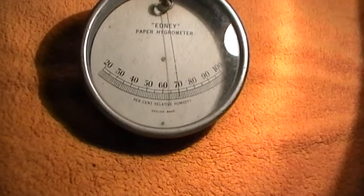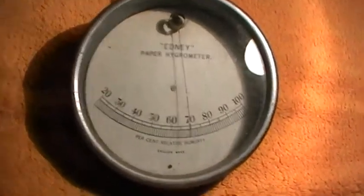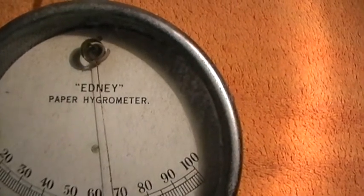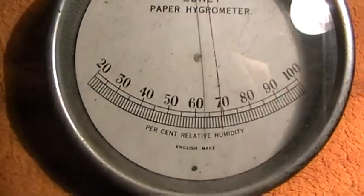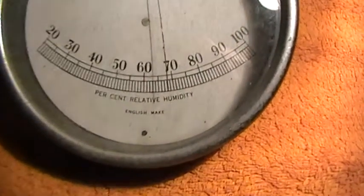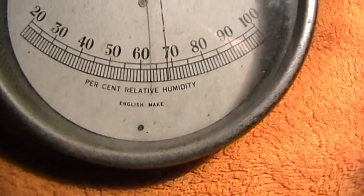It's quite an old instrument made by a well-known maker. As you can see, it's called the Edney paper hygrometer. It's in degrees up to 100, where you can see on there, percent relative humidity. It's English made.